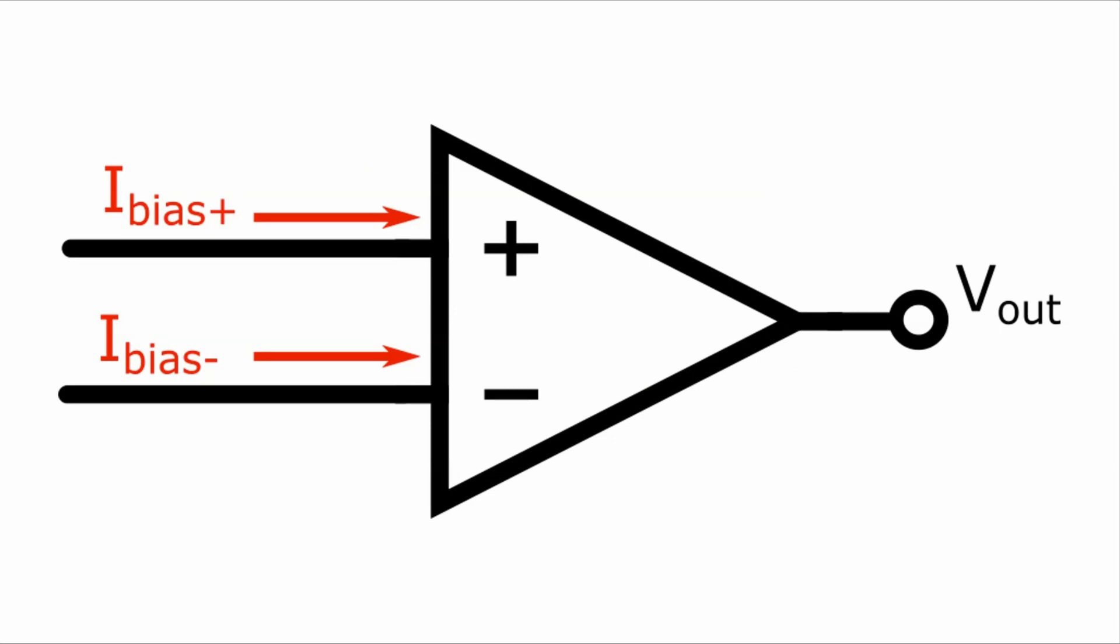In an ideal op-amp, the input impedance of the inverting and the non-inverting pin approach infinity, and therefore no current flows into either of the input terminals. In reality, a small current will flow into the terminal to bias the transistors inside the op-amp, and this value can range from as low as 60 femto-amps up to as high as hundreds of nano-amps.